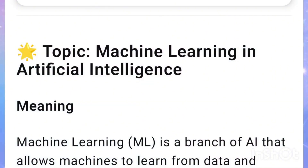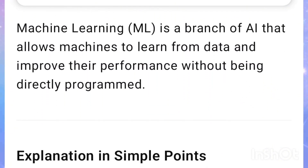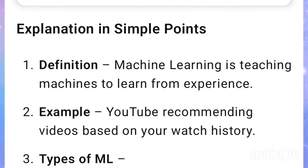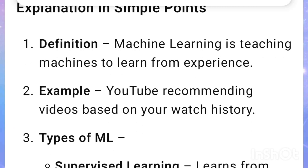Machine Learning and Artificial Intelligence: Machine Learning (ML) is a branch of AI that allows machines to learn from data and improve their performance without being directly programmed. Machine learning is teaching machines to learn from experience. Example: YouTube recommending videos based on your watch history.